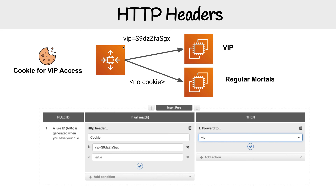Let's look at one more example — cookies, because cookies are a popular utility when talking about headers. Here I have a web service that grants VIP access if you have a special code set in your cookie. I look for a header called cookie, and if it has VIP with that code, it's going to go to the VIP server. And if that cookie is not present, it's going to go to the regular server.